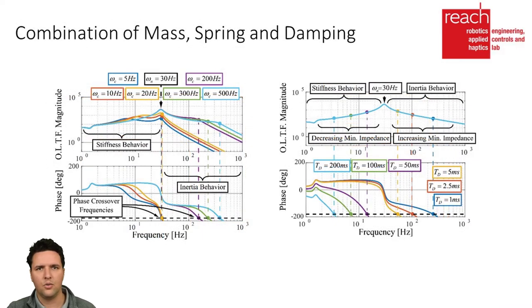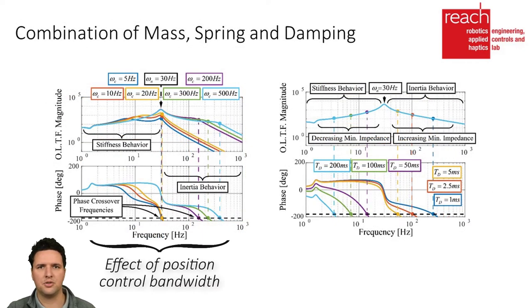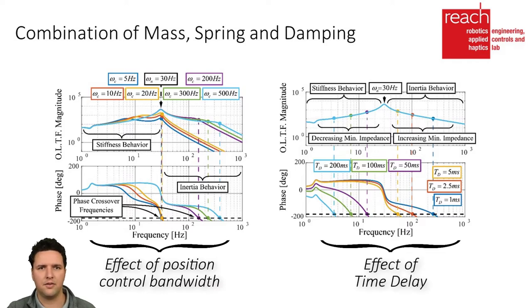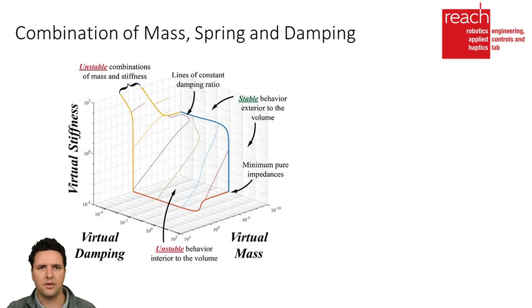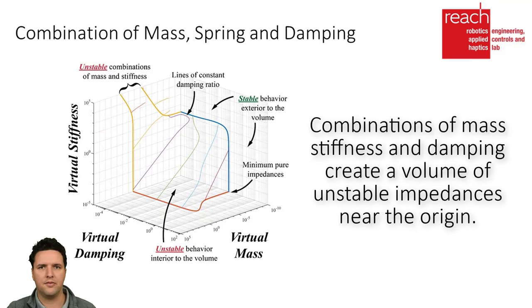We also examined the effects of position control bandwidth and time delay on combinations of all three virtual admittances, and were able to create a map showing the volume of unstable impedances an admittance-type haptic device characteristically demonstrates.